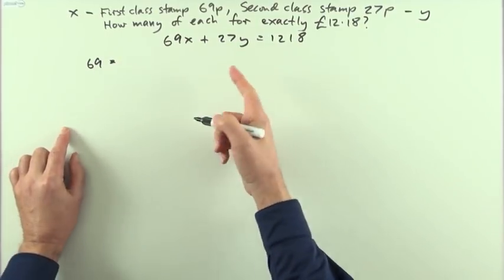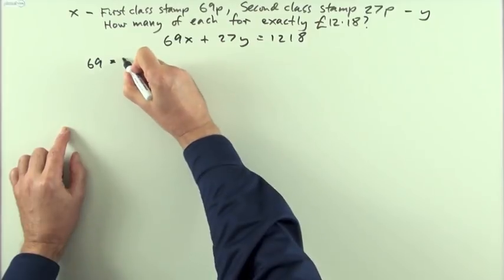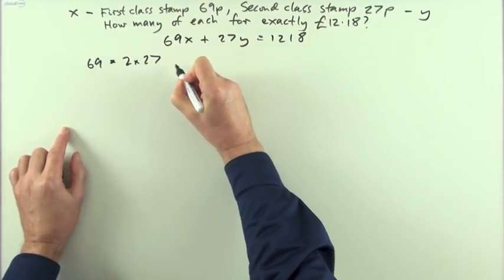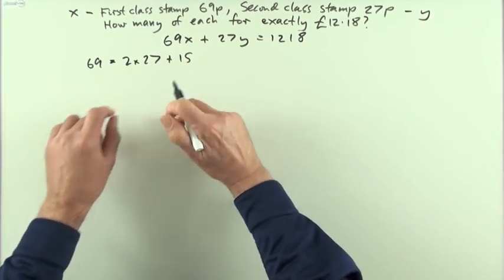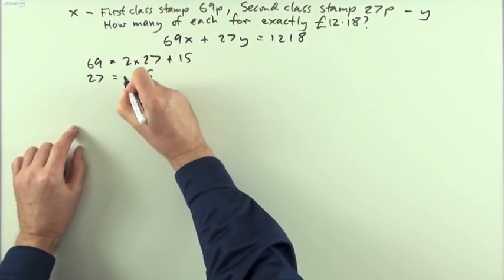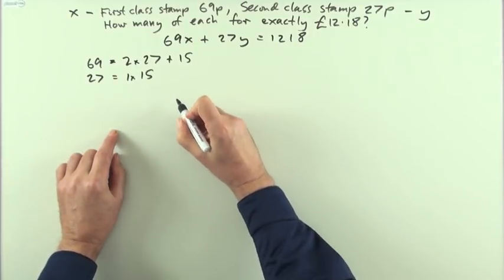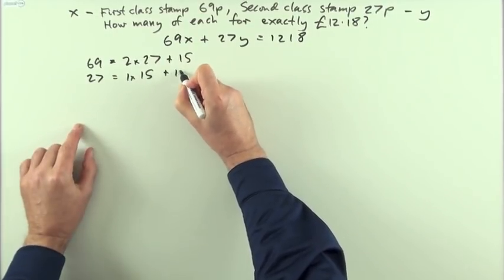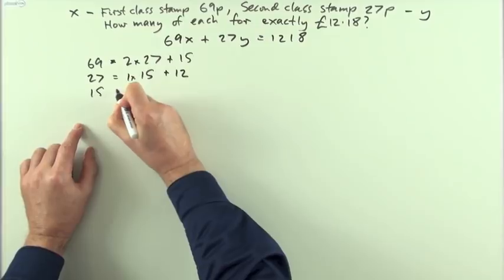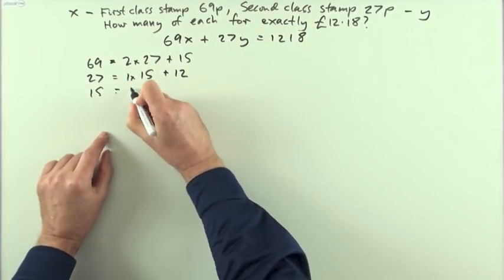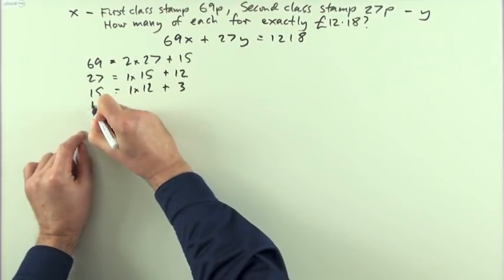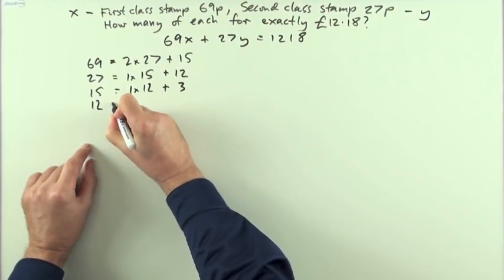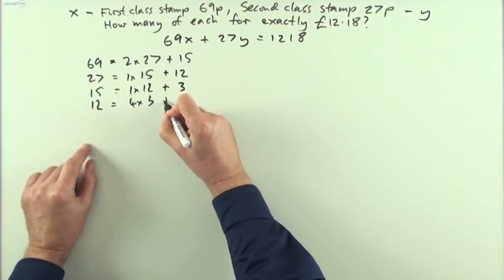So 69 then can be represented as 2 times the 27, that's 54, so that would leave me with 15. So I'm now working with the 27, 27 and 15, I can only get one 15 from that, and that's then going to leave me with 12. Working with these two, the 15 again is only one lot of 12, and that would leave me with a 3, and then finally working with these two, 12 is 4 times 3 plus 0.